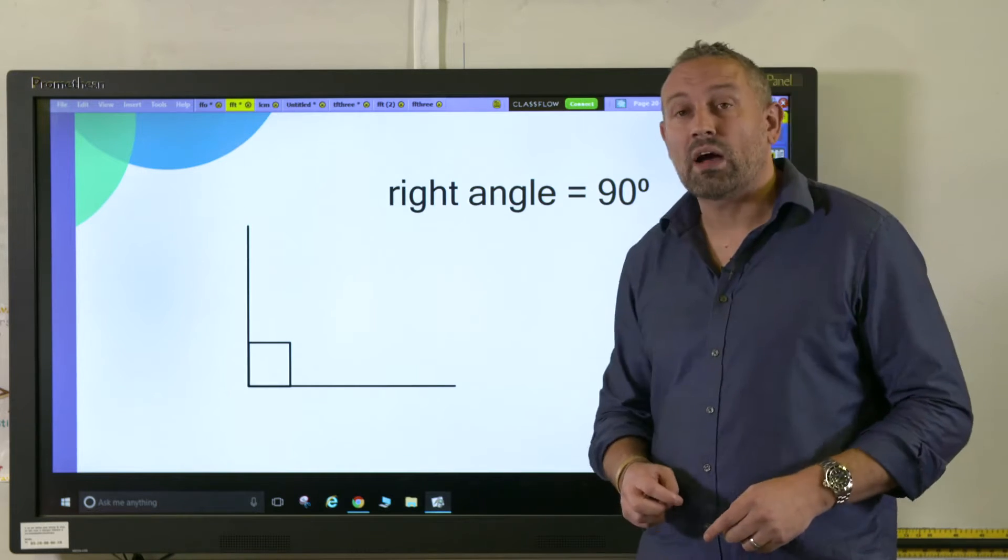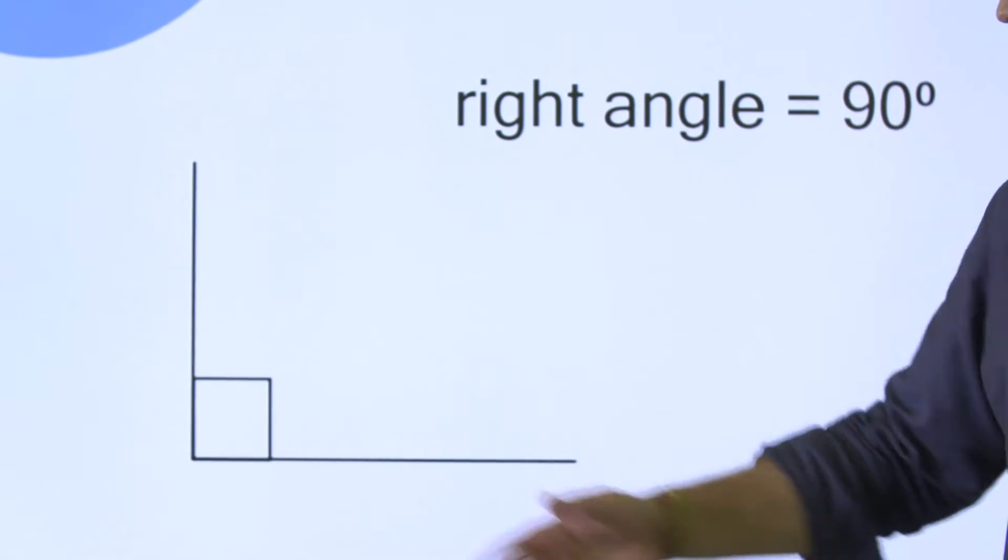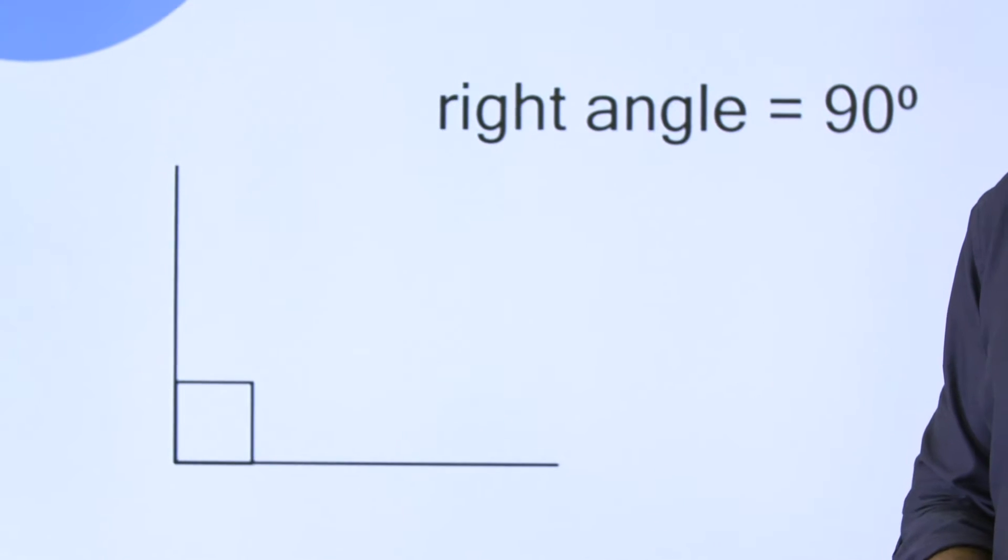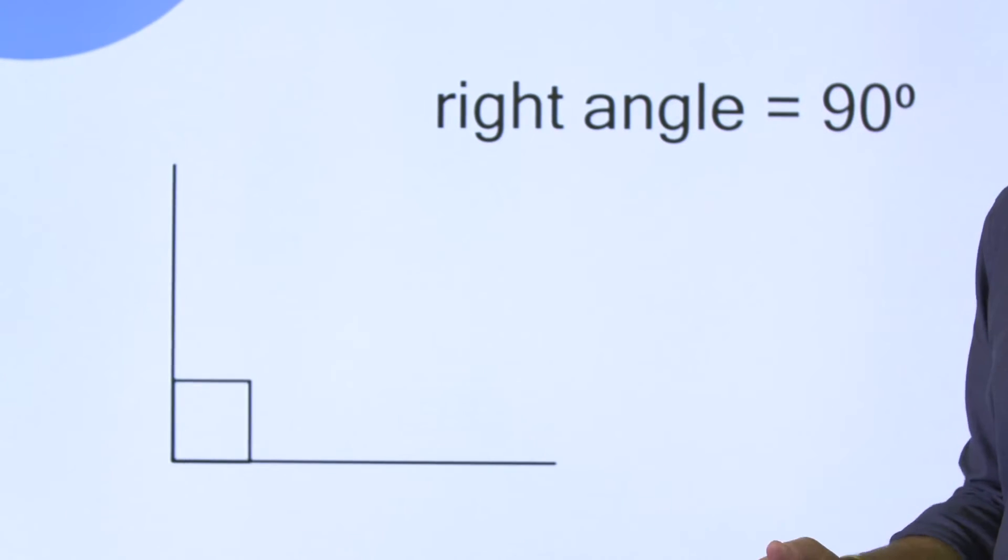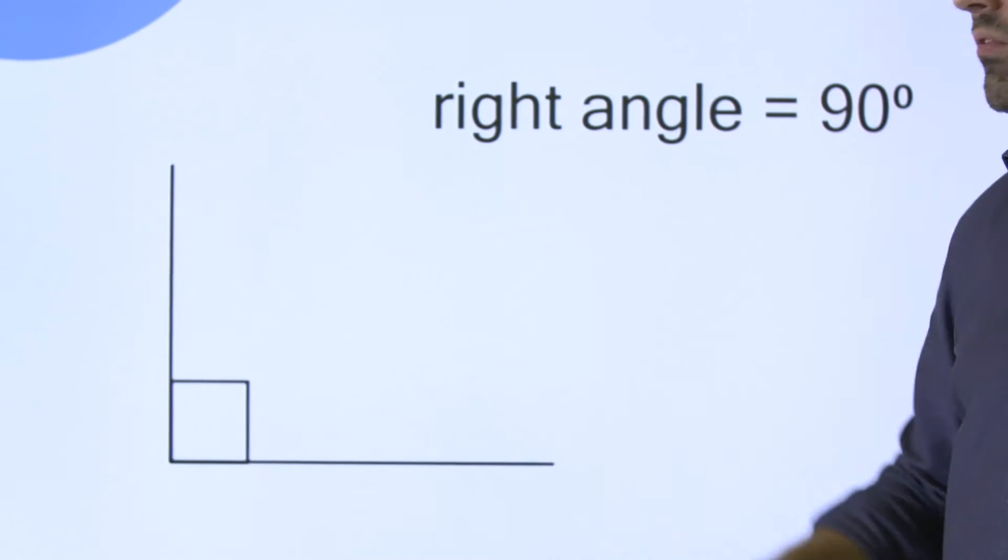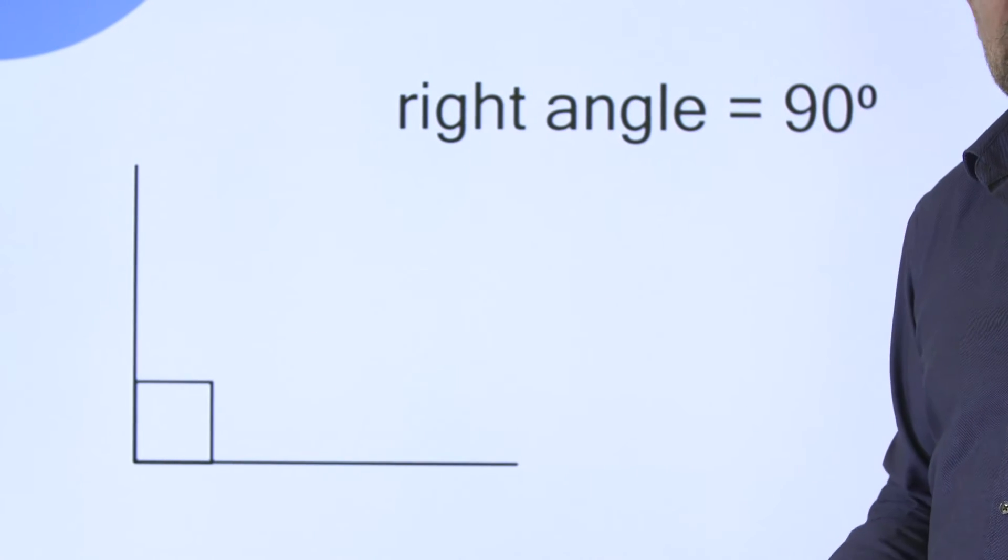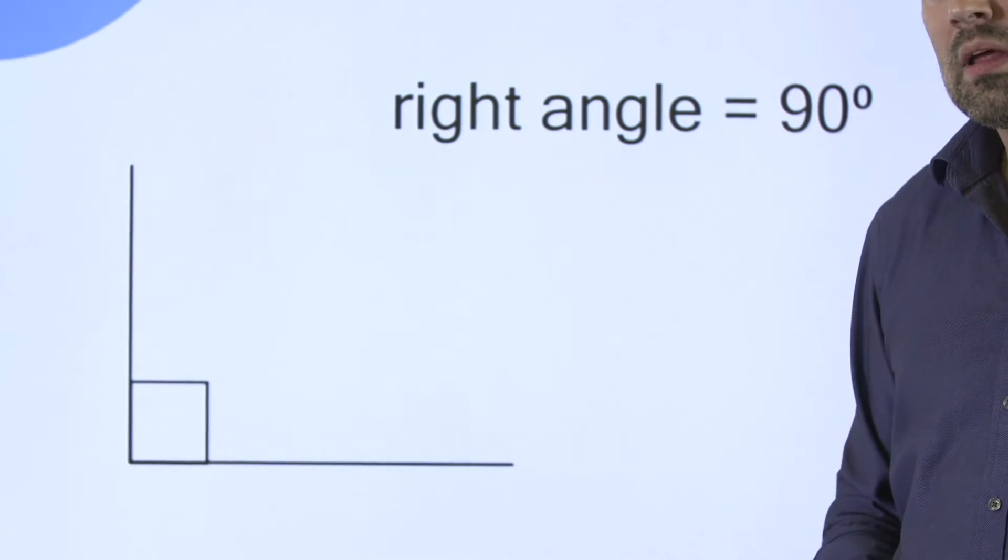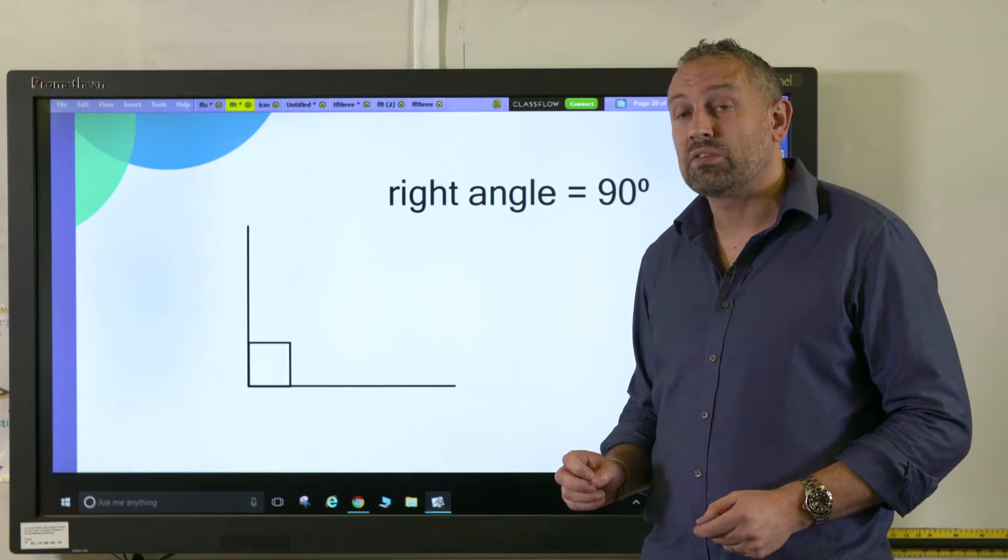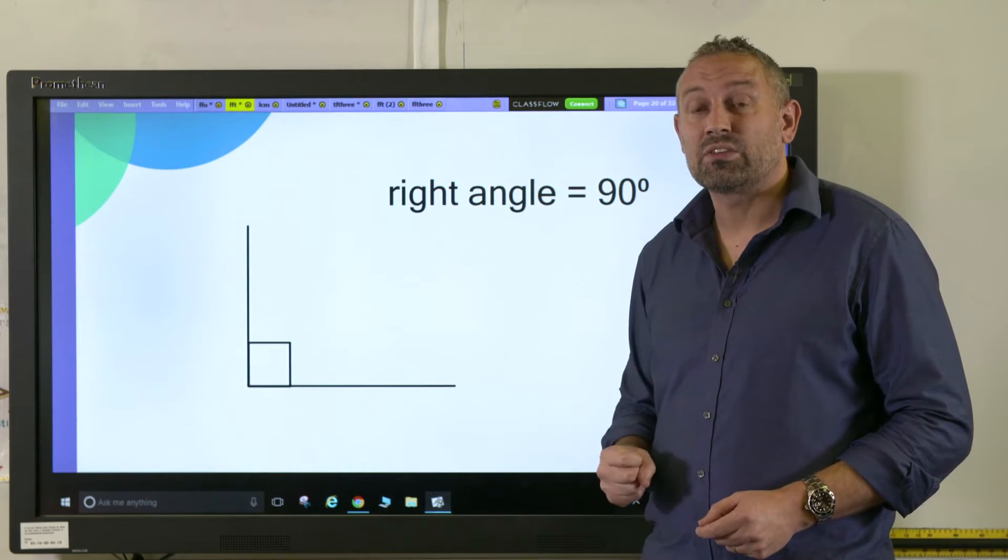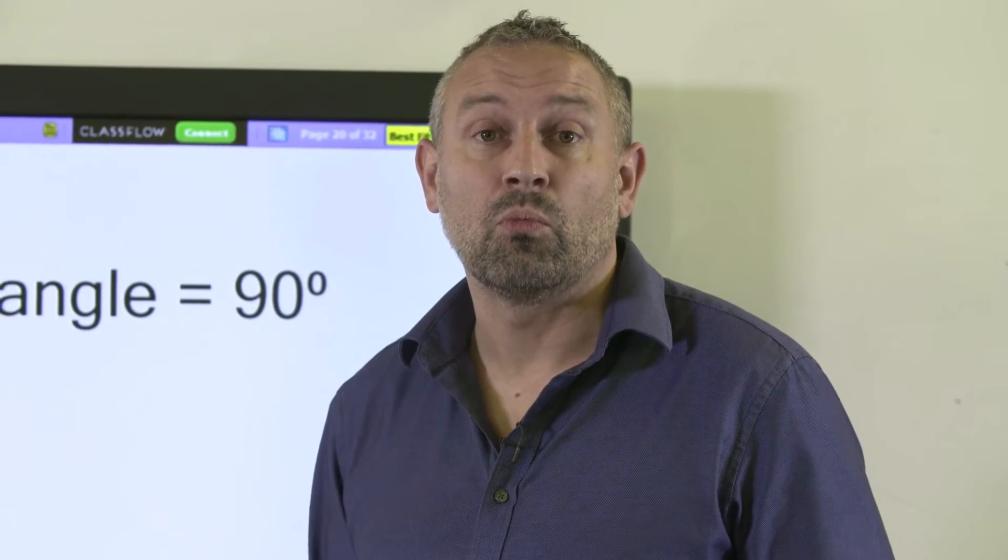Now when we're looking at right angles, a right angle is always the corner of a square and it always measures 90 degrees. It doesn't matter on the orientation of the right angle whether it's on the left or around, it will always be the same. We denote that with a little square in the corner. That's a really useful piece of understanding for when the children later on tackle more challenging number and word problems with angles.